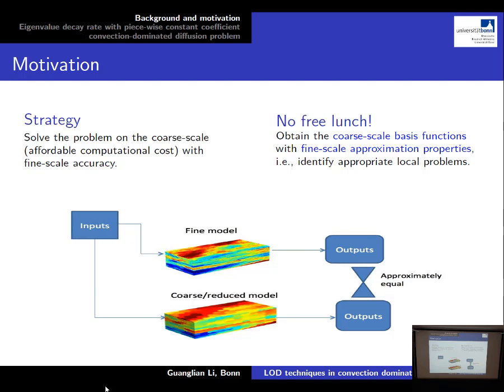This is the typical outline of the multi-scale model reduction algorithm. Given the fine model and the inputs — for example, the boundary condition and the initial condition — we want to get the outputs, such as the solution or some quantity of interest. But this route is very expensive because we need to resolve the micro-scale features, which requires a very fine mesh. So instead we will solve a cheaper one: the reduced model or coarse model coupled with the same inputs, and our goal is that the outputs from this reduced model should have a good approximation to the outputs from the fine model.